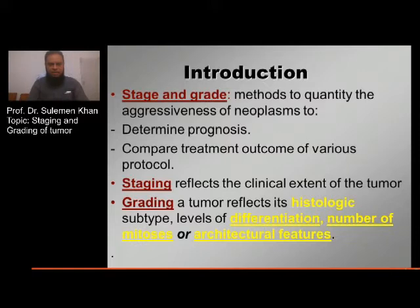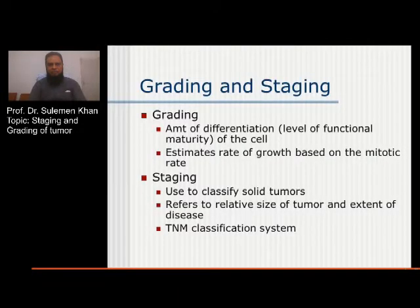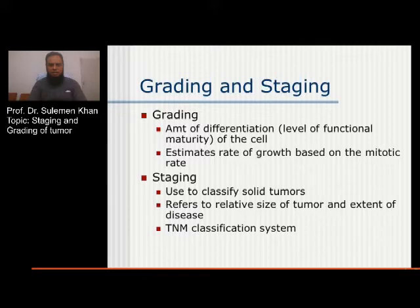Staging reflects the clinical extent of the tumor, whereas grading of any tumor reflects its histological subtype, level of differentiation, number of mitoses, or architectural features. Grading describes the amount of differentiation — the level of functional maturity of the cell — and estimates the rate of growth based on the mitotic rate. Staging is used to classify solid tumors and refers to the relative size of the tumor and extent of disease.